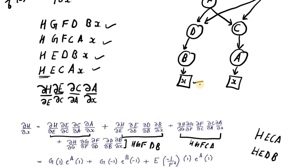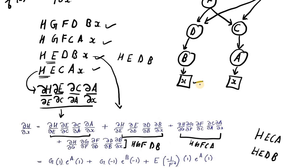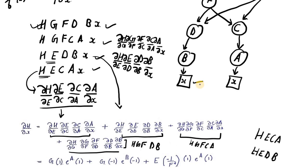We replace the chain rule expressions with actual values from our substitution table. Del h by del e gives g. Del e by del c gives 1. Del c by del a gives e raised to a. Del a by del x gives 1. For the path h-e-d-b: del h by del e gives g, del e by del d gives minus 1, del d by del b gives e raised to b, and del b by del x gives minus 1. We compute all four path derivatives and add them to obtain del h by del x. This is how we decompose the derivative into chain rule form.